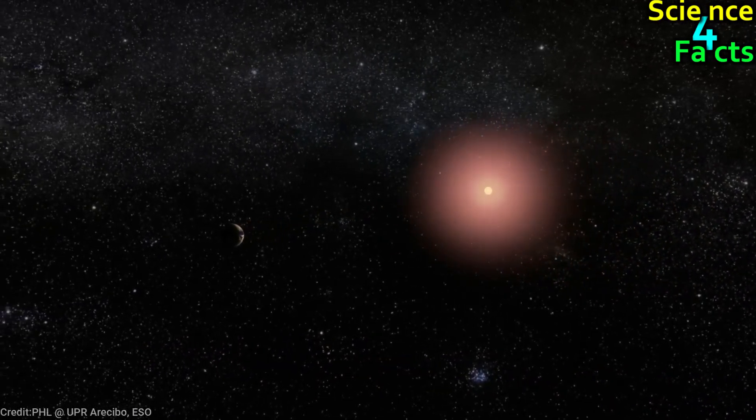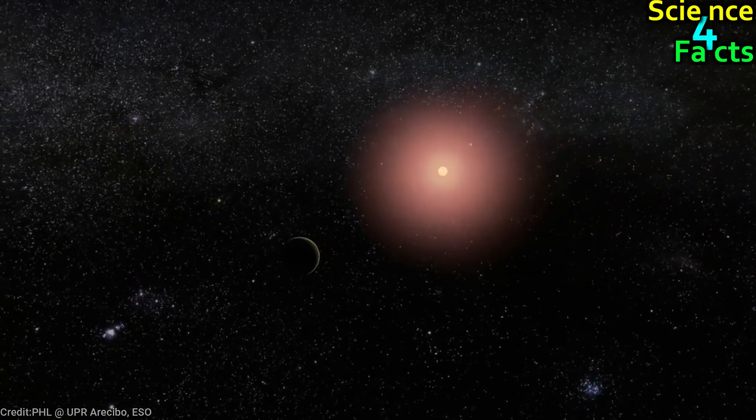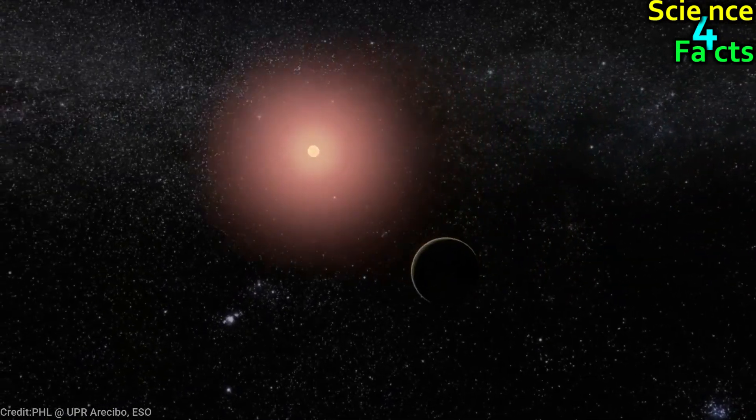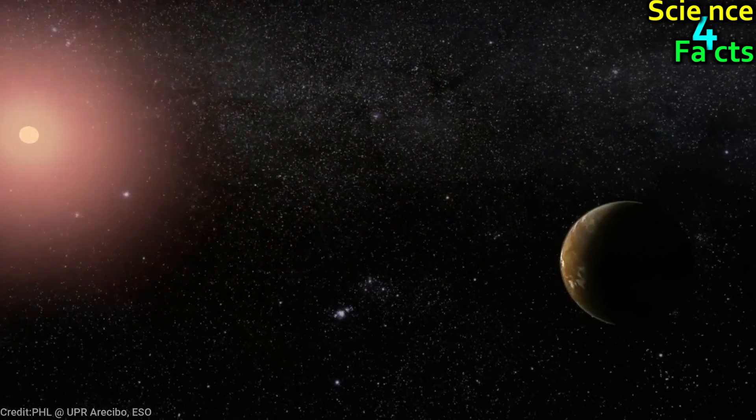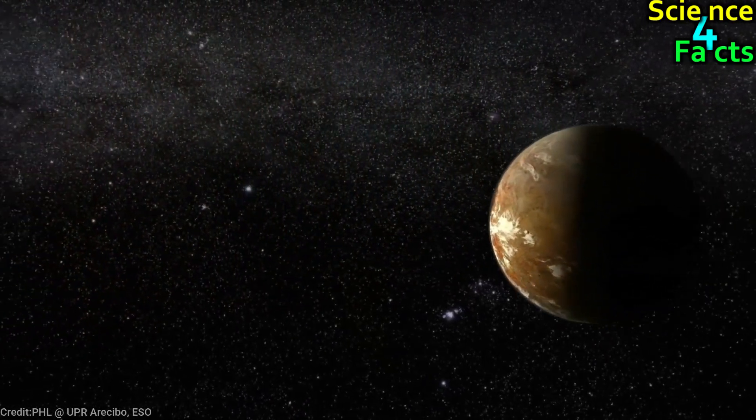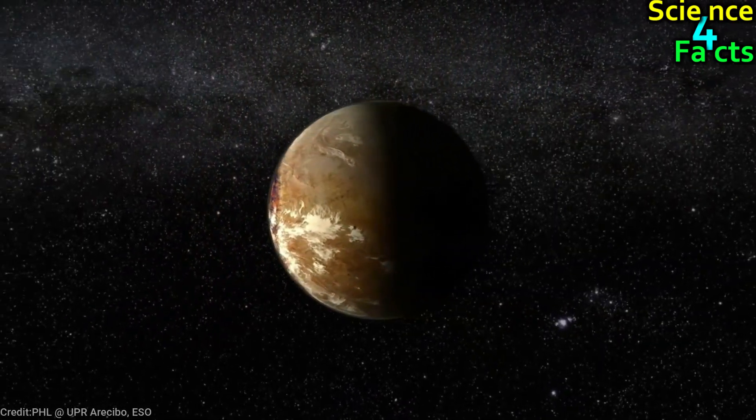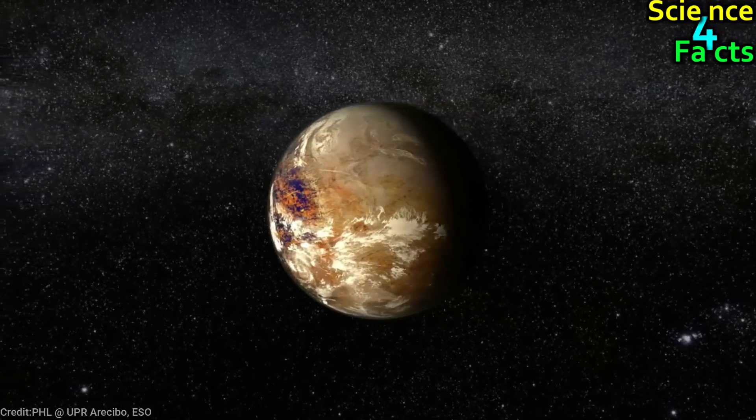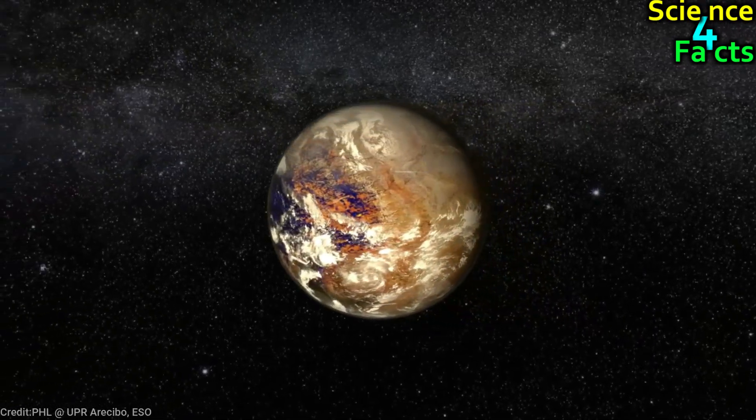This means that the light we see from Proxima Centauri actually left the star over four years ago and has been traveling through space ever since. Most stars in the universe are much farther away than Proxima Centauri, so their light is even weaker by the time it reaches us.